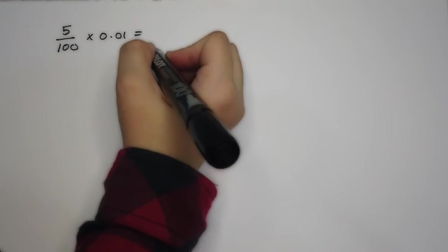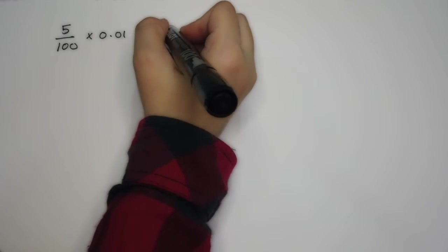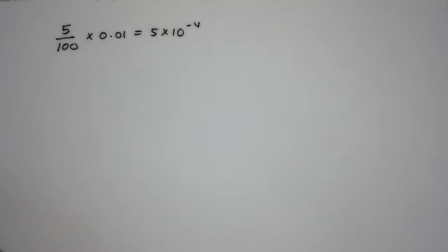So 5% from the initial concentration, which is 0.01, is equivalent to 5 times 10 to the power of negative 4.